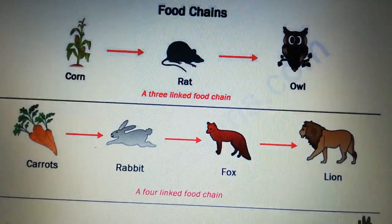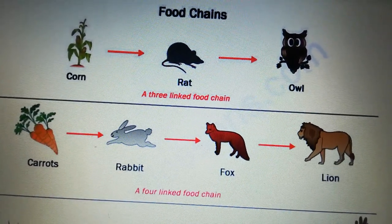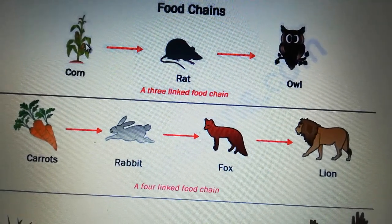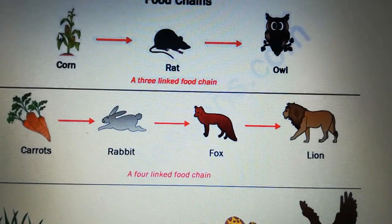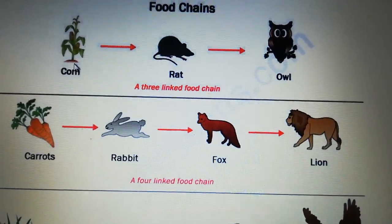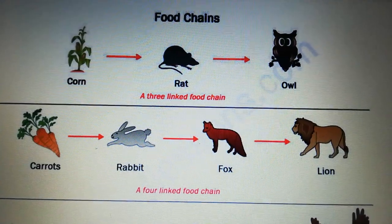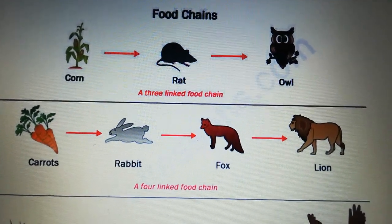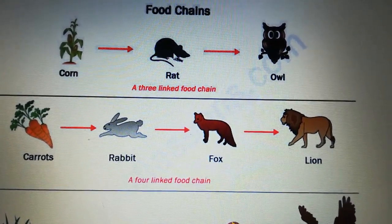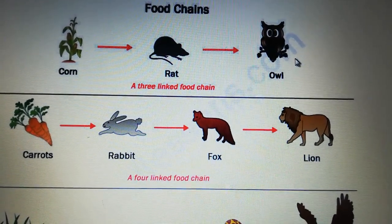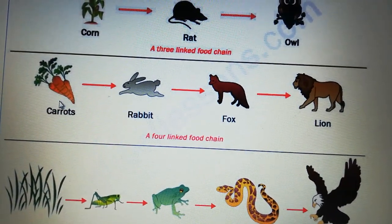If we start with this food chain, it is composed of three links. This is the corn. It starts with a plant, which is the corn here, that is eaten by the rat, which is eaten by the owl.